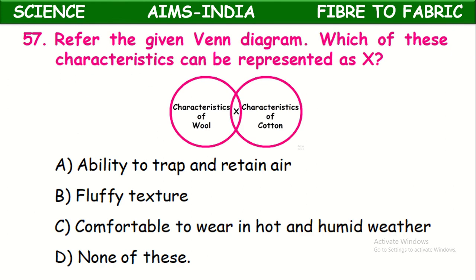Refer to the given Venn diagram. Which characteristics can be represented at X — the intersection of characteristics of wool and characteristics of cotton? The common factor for both cotton and wool is the ability to trap and retain air. That is the common property for both cotton and wool, so in the place of X we can place this characteristic.